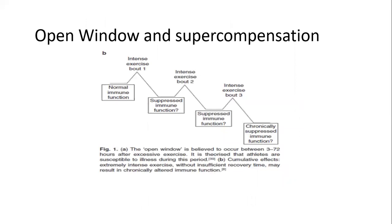The open window theory and super compensation apply to immunity just as they do to fitness. We can use the same staircase concept: normal immune function, a bout of exercise suppresses it slightly, another bout suppresses it again, until we end up with chronically suppressed immune function. Over a long period of time this has an accumulative effect on suppressing our immune systems, opening that window for sickness.